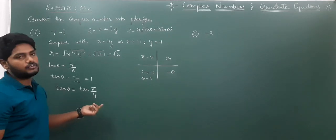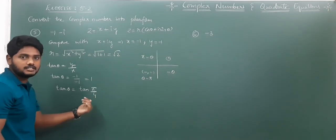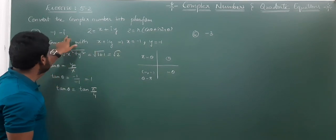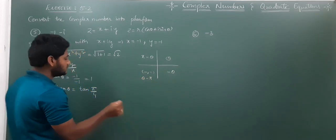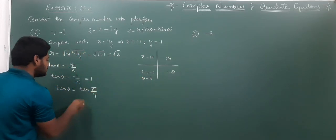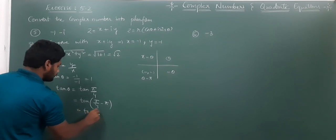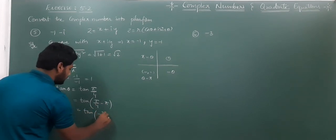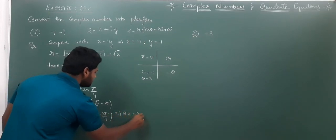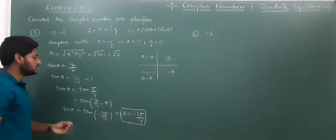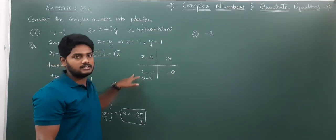tan θ = 1 = tan(π/4), so we might think θ = π/4. But we cannot consider π/4 because this complex number is in the third quadrant. For the third quadrant we need to apply θ - π. So π/4 - π = (π - 3π)/4 = -3π/4. Therefore θ = -3π/4. Whatever we get for θ, we must adjust it based on which quadrant the complex number is in.